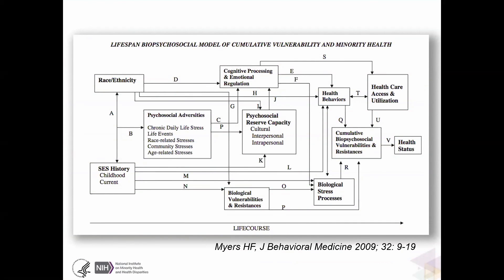In this diagram published by Dr. Hector Myers in 2009, he depicted the lifespan biopsychosocial model of cumulative vulnerability that explains the development of disease in minority groups in the U.S., and very likely everywhere. He depicted elements pertaining to social demographic factors, genetic or biological factors, cognitive, psychosocial, cultural, health behaviors, and more.